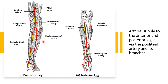The anterior tibial artery passes anteriorly between the tibia and fibula through a gap in the interosseous membrane, then runs inferiorly down the entire length of the leg, continuing into the foot as the dorsalis pedis artery.